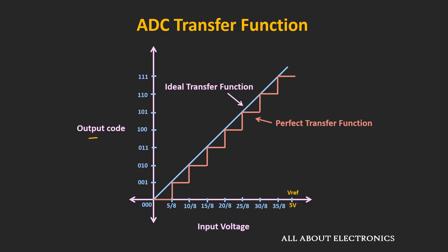In this transfer function, each step corresponds to 1LSB. Due to the quantization process, there is an inherent quantization error of 1LSB. That means whenever the input is between 0 and 5/8V, it will be treated as all zeros. This error can be reduced to ±0.5LSB by shifting the transfer function towards the left by 0.5LSB.